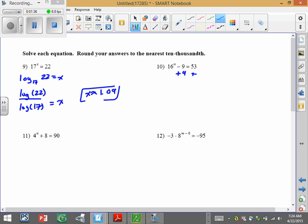Here we've got to add 9 first. So then we know that 16 to the n equals 61. Now use your logs. Log base 16 of 61 equals n. And then use your change of base. So log of 61 over log of 16 equals n. So n is about 1.48.